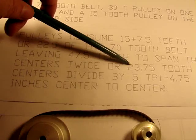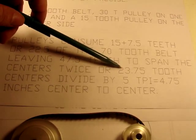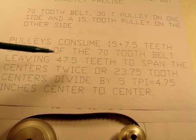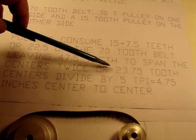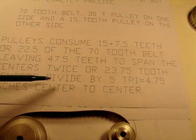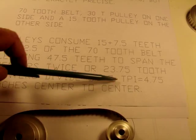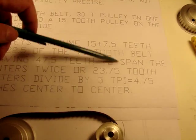And so, each one of those spans is 23.75 teeth, or 47.5 divided by 2. And the center, 23.75 divided by 5 teeth per inch is 4.75 inches.